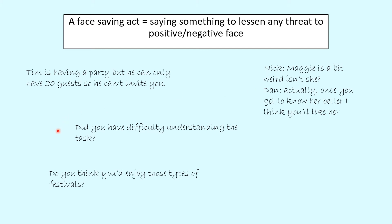The last two examples have now become interrogative statements — 'Did you have difficulty understanding the task?' and 'Do you think you'd enjoy those types of festivals?' If you aren't sure what an interrogative statement is, please watch my video that goes through different sentence types. Instead of excluding someone or making their work feel unappreciated, these now give listeners more of a chance to respond and stop it becoming a situation where their positive face is potentially threatened.